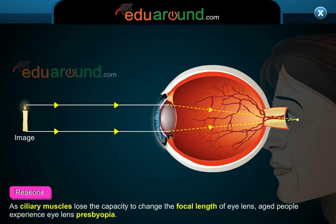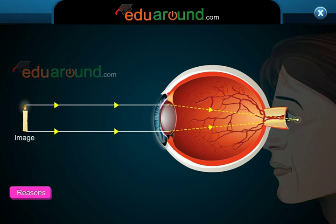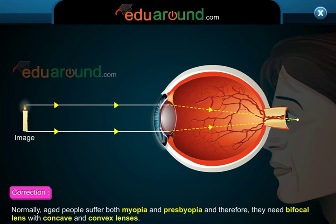As ciliary muscles lose the capacity to change the focal length of the eye lens, aged people experience presbyopia. Normally, aged people suffer both myopia and presbyopia and therefore they need bifocal lenses with concave and convex components.